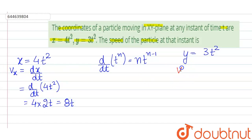Now we find vy again differentiating y with respect to t so it will become 6t.